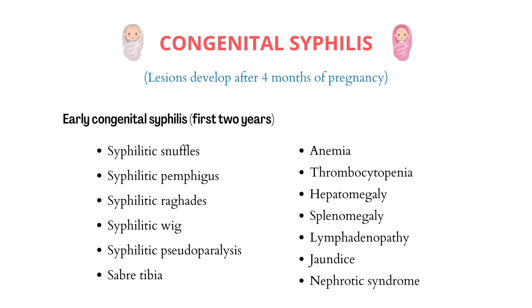The manifestations can be remembered as the 6 S's. The first S is syphilitic snuffles, meaning blood-stained purulent nasal discharge. The second is syphilitic pemphigus, meaning papules and vesicles with bullae — the characteristic feature is the bulla. The third is syphilitic rhagades, meaning mucous patches with radiating fissures over the angle of the mouth.